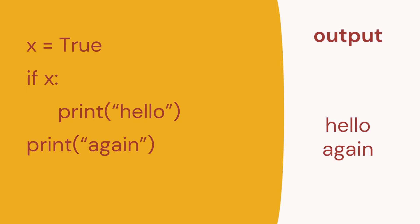In this example the code is different although we have the same output. We still have two print statements but one of them is outside the if statement, and you can see that by the indentation. So a block of code is one print statement — print hello. Print again happens anyway, without the if statement being true. So the output is the same but the logic is different.